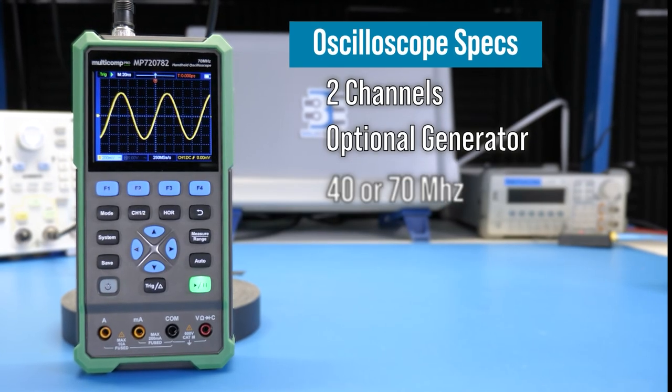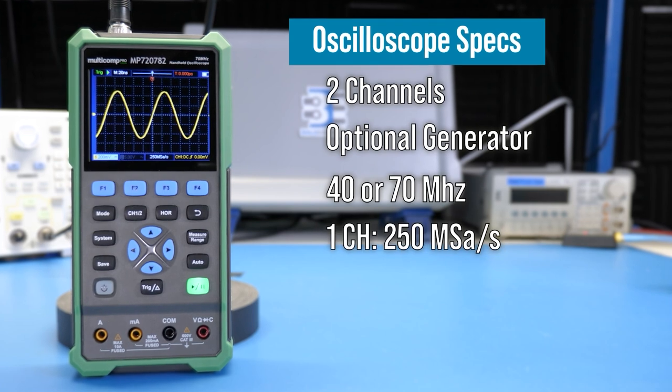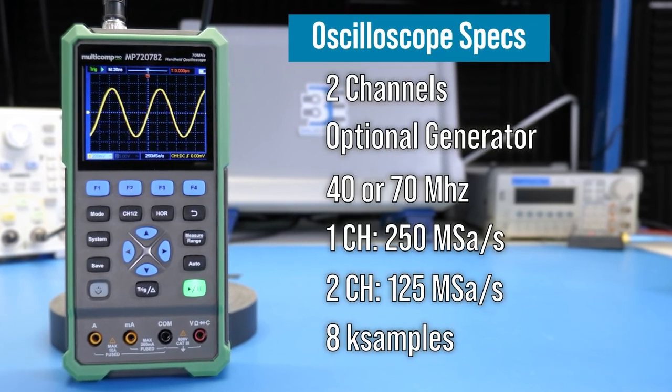This model's bandwidth is 70 MHz with a sample rate up to 250 MHz per second with a memory depth of 8 ks.